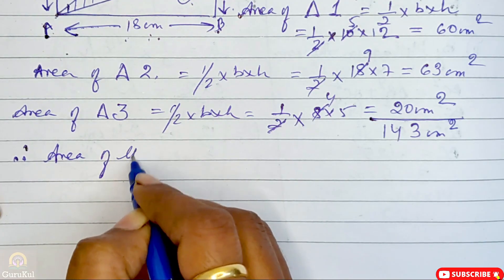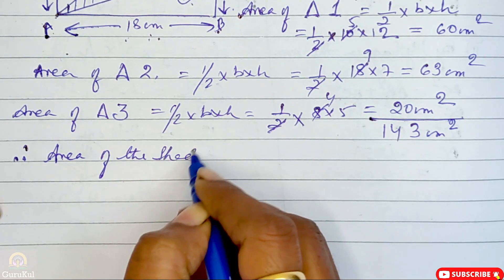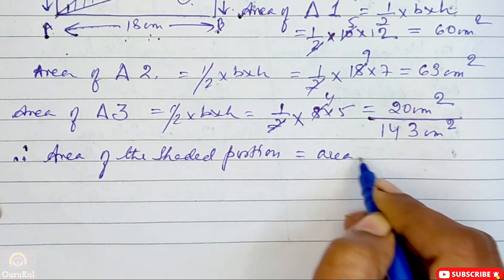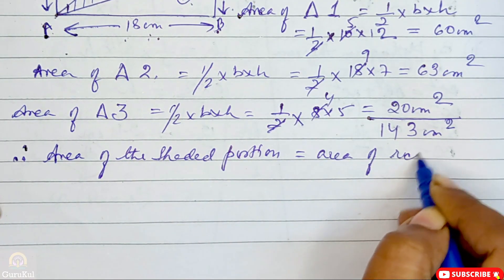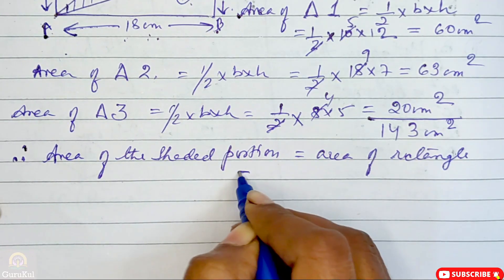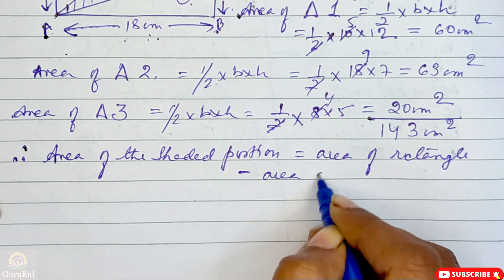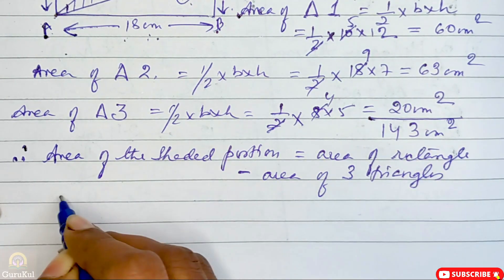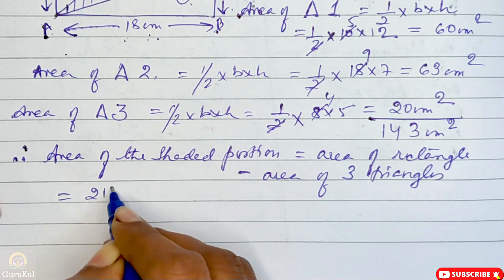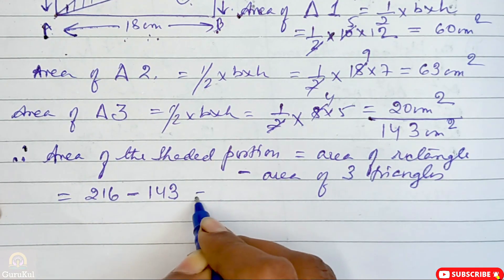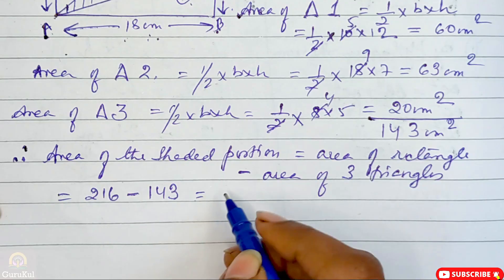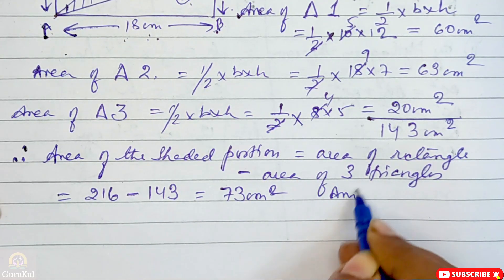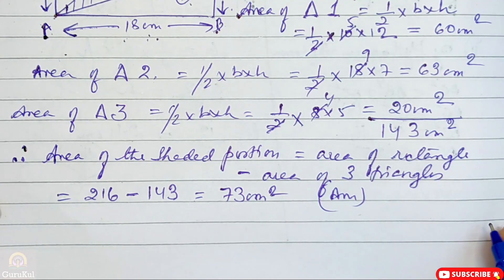Therefore, area of the shaded portion = area of rectangle − area of 3 triangles = 216 − 143 = 73 cm square. That is the area of the shaded portion.